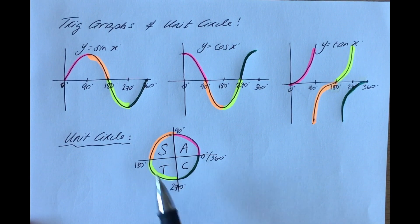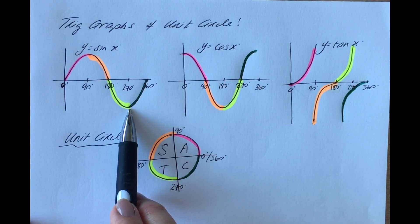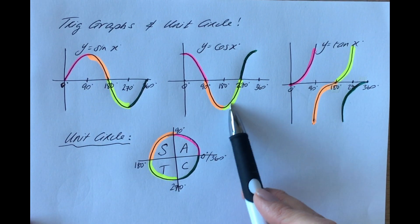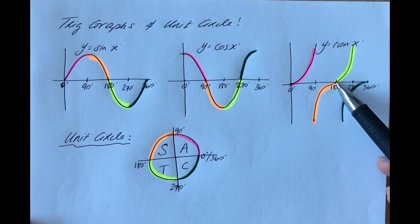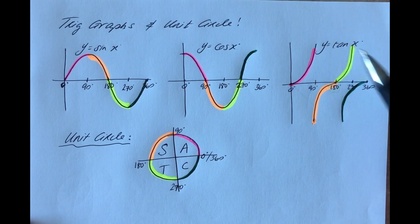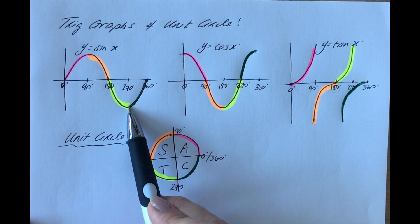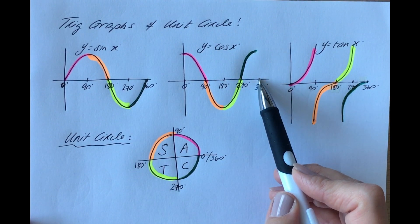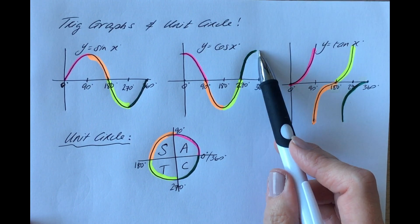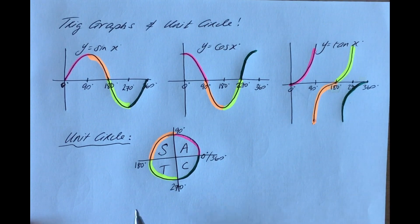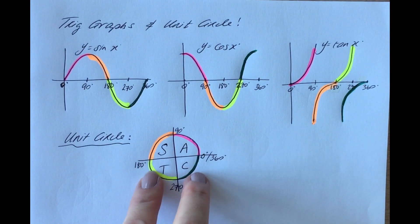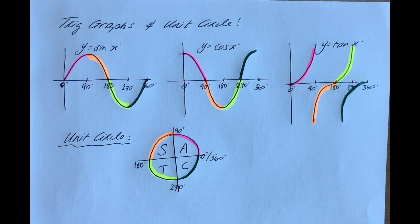The T quadrant, between 180 and 270, means only the tan is positive. Between 180 and 270, the sine graph is below the x-axis — negative. The cos between 180 and 270 is also below the x-axis — negative. But the tan between 180 and 270 is above the x-axis and therefore positive. The last quadrant, C, implies that only the cos curve is positive between 270 and 360. The sine is below the x-axis in that range, and the tan is negative. That's your relationship between the unit circle and the sine, cos, and tan — and now we can rely on this to figure out all possible solutions to our trig equations.